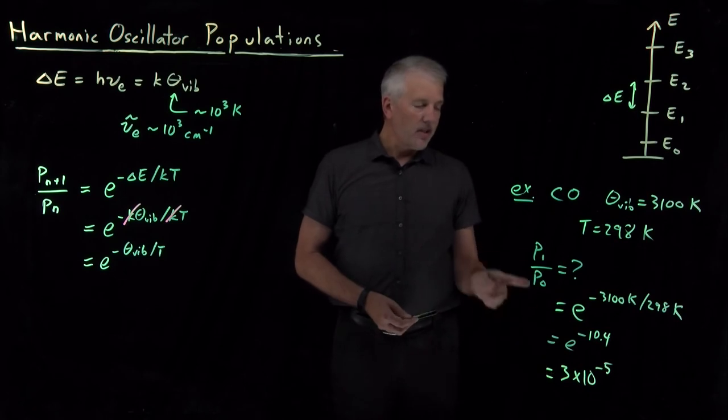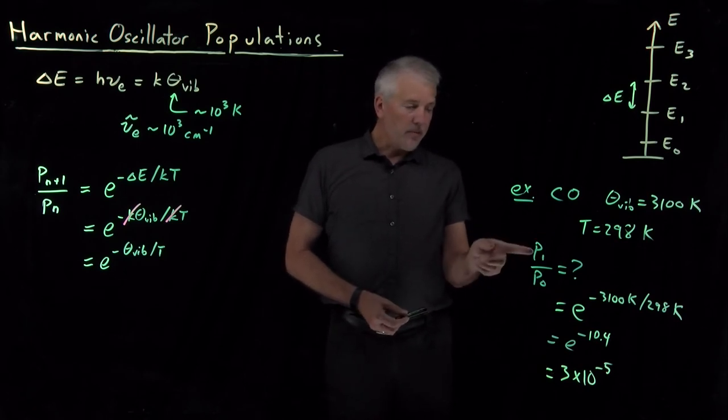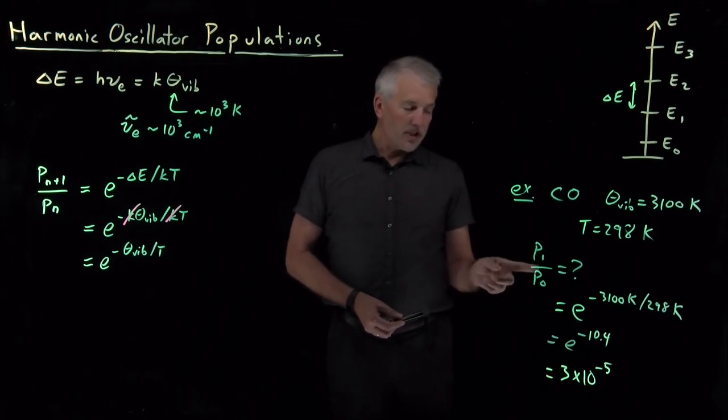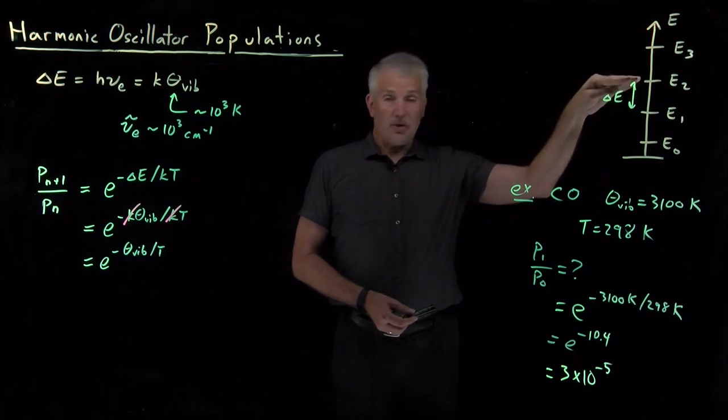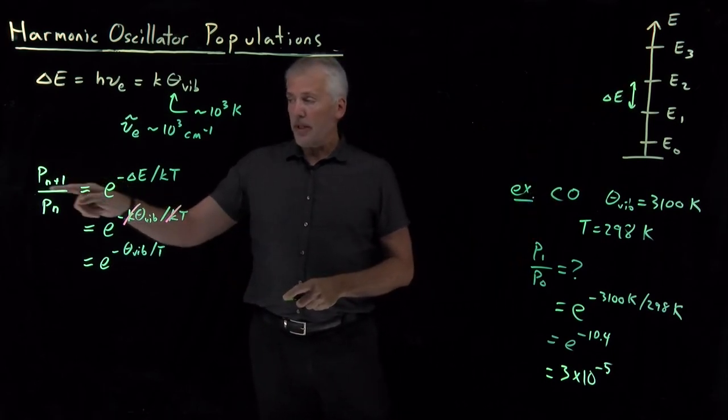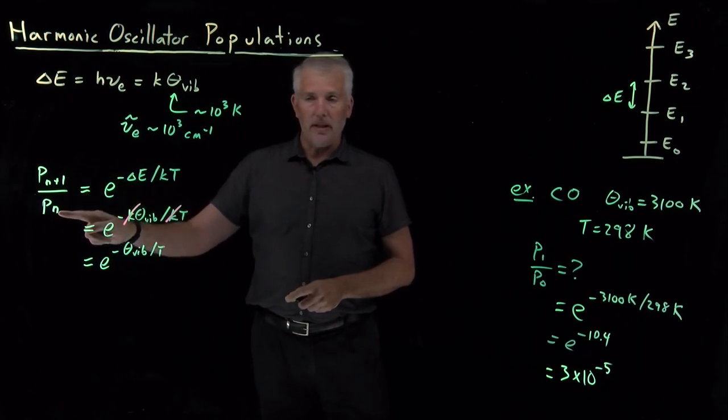So what that tells us is the population, the fraction of molecules that occupy the N equals 1 state, is 3 times 10 to the minus 5 as much as the population in the ground state. The population in the N equals 2 state is going to be even lower. That's going to be another factor of 3 times 10 to the minus 5 smaller than the N equals 1 state.